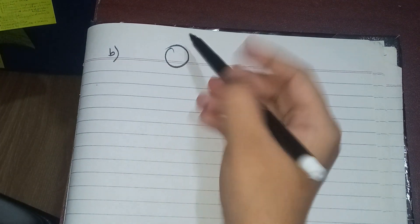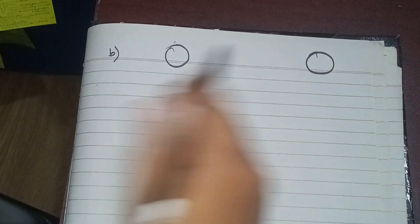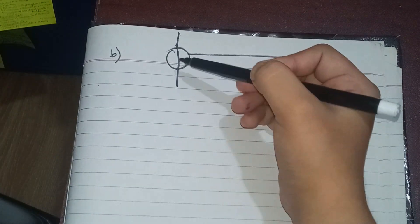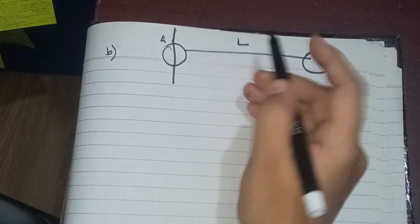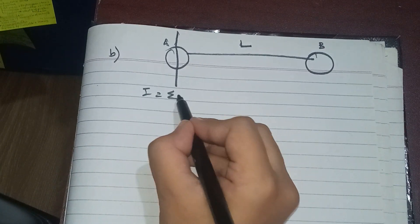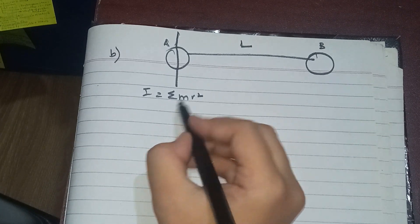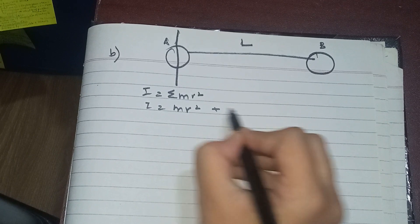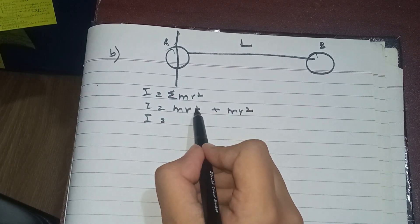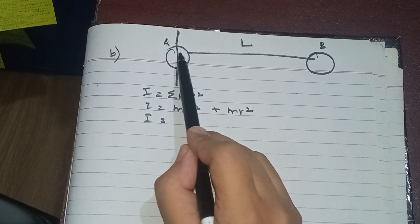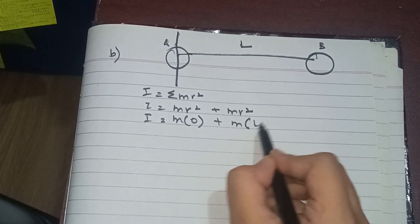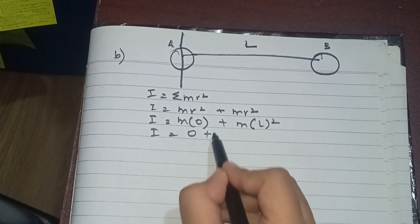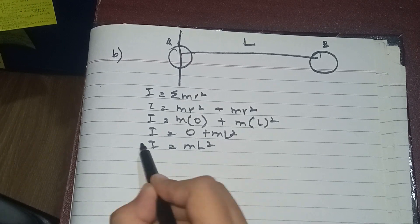In the second scenario, the axis of rotation is placed at one end of the rod rather than the center. One mass is at the axis (radius = 0) and the other mass is at the far end (radius = L). So I = m(0)² + mL² = 0 + mL² = mL². The moment of inertia is mL² in this case.